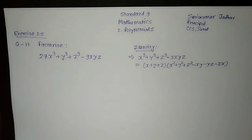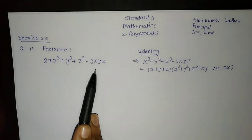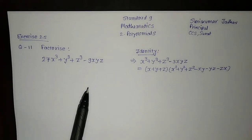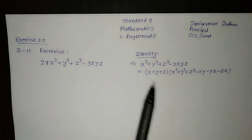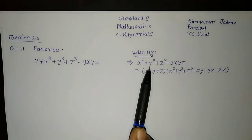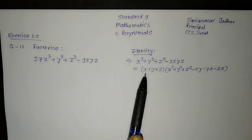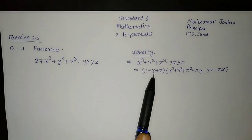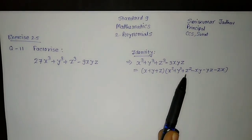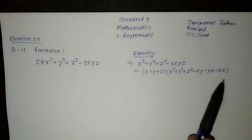So let us begin with: factorize 27x³ plus y³ plus z³ minus 9xyz. We are going to use this identity — remember, I have written it here: x³ plus y³ plus z³ minus 3xyz equals (x + y + z)(x² + y² + z² minus xy minus yz minus zx).